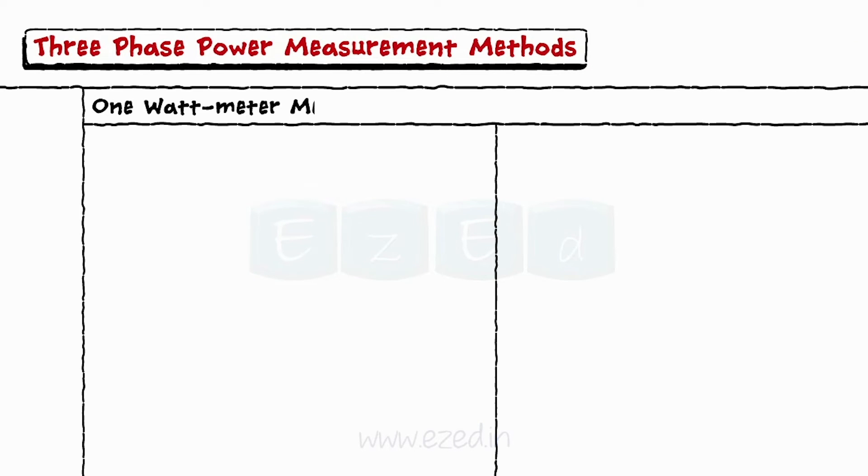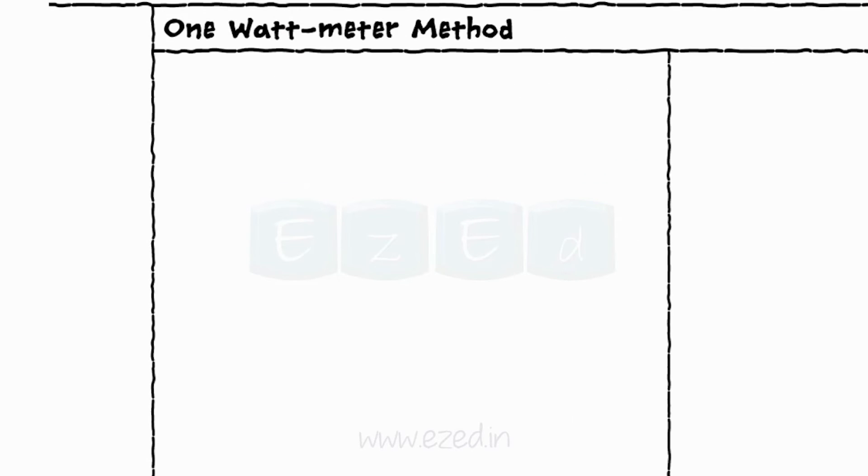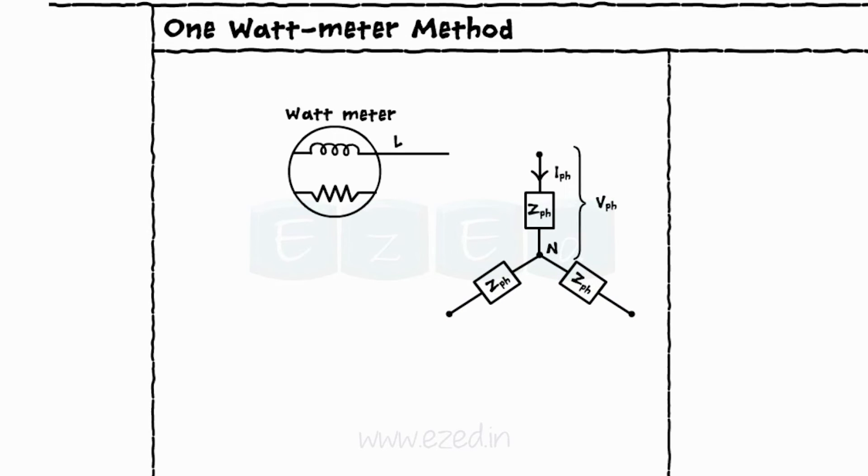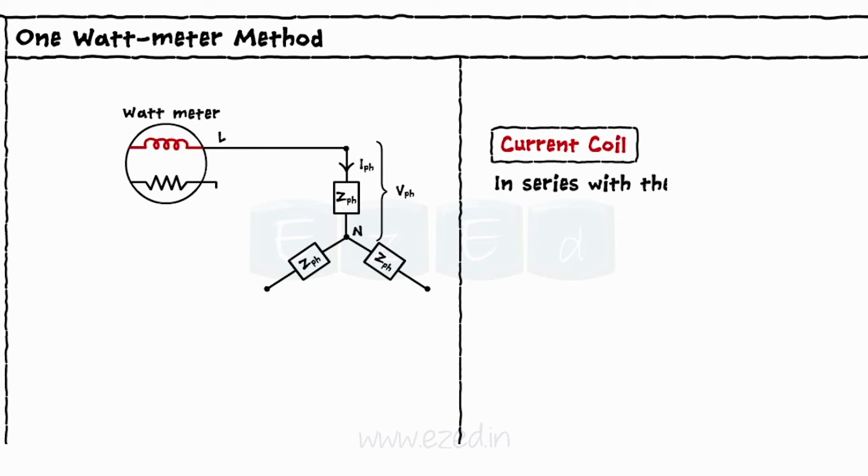Let's start with the one wattmeter method. For the star connected balanced three phase system, the wattmeter is connected as shown with the current coil in series with phase one and the potential coil across the phase.